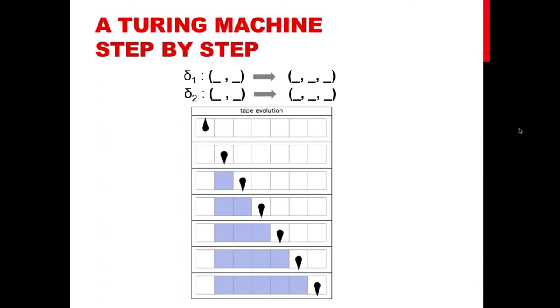And when the head is in state one, with the arrow pointing up and there is nothing on the tape, the machine leaves it blank, moves to the right and changes to state two. Then on state two and a blank on the tape, it prints a blue square and moves to the right and keeps doing the same because it remains in state two.